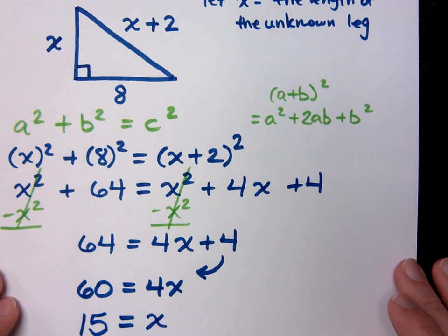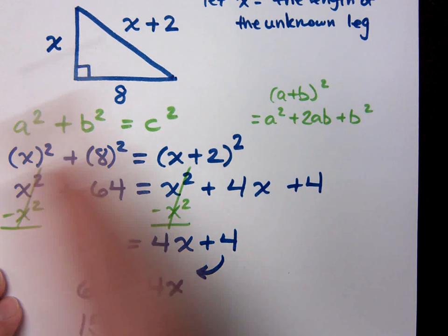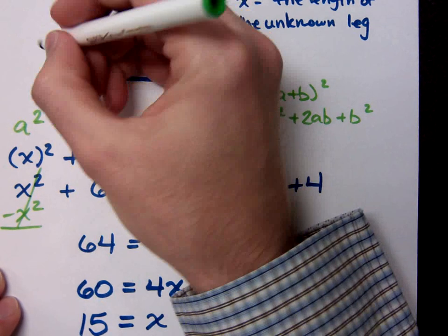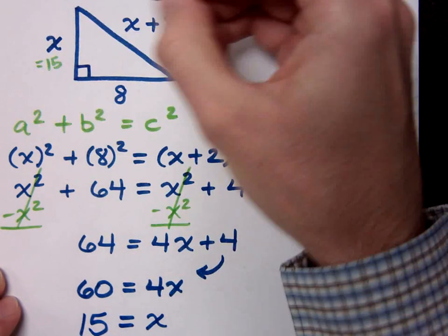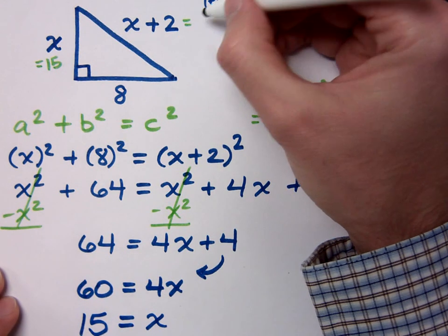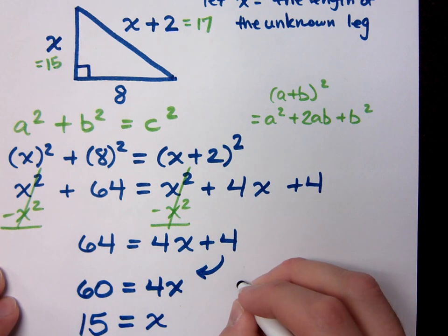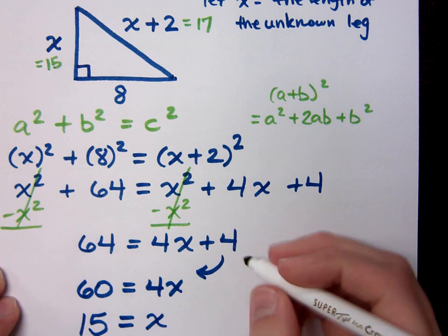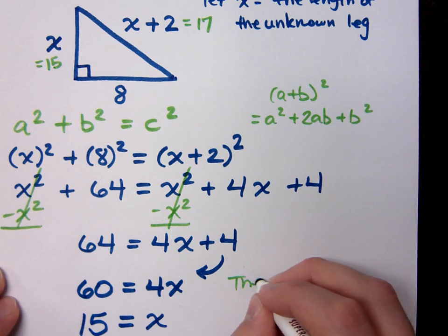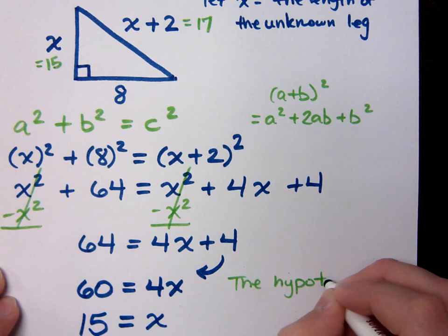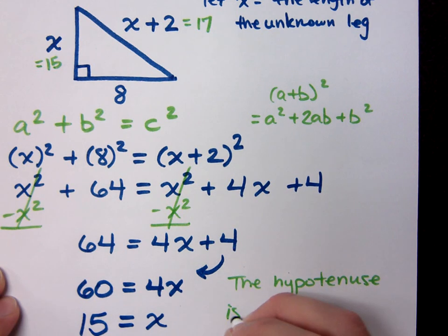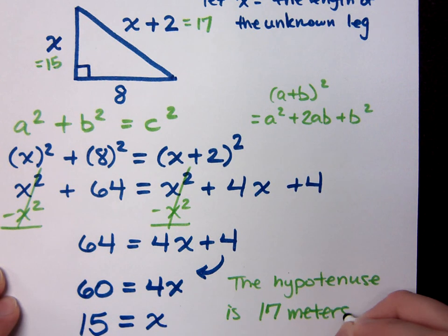Make sure you read what you wrote here. You said x is the length of the unknown leg. So that means that this guy right here is 15, which means the hypotenuse is 17. But make sure you pay attention to your units. What units are we measuring here? We're measuring in meters. So we can say the hypotenuse is 17 meters.